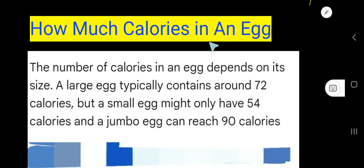How much calories in an egg? The number of calories in an egg depends on its size. A large egg typically contains around 72 calories, but a small egg might only have 54 calories and a jumbo egg can reach 90 calories. On average, you can think that an egg has 70 calories.